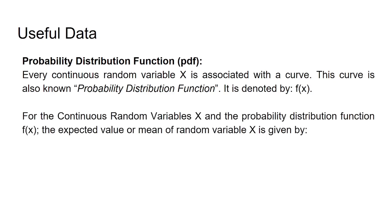For the continuous random variable X and the probability distribution function f(x), the expected value or mean of random variable X is given by the formula: expected value or mean denoted by μ or E(X) equal to integration from minus infinity to plus infinity x f(x) dx.